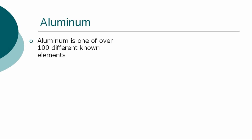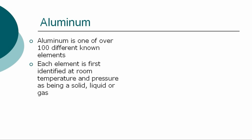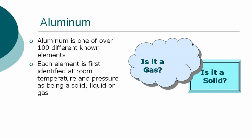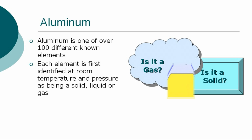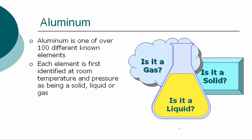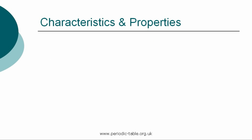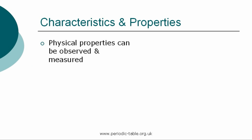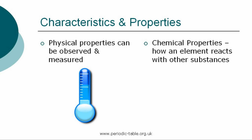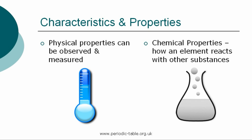The element aluminum is one of over 100 different chemical elements known to modern chemistry. Each element is first identified at room temperature and pressure as being a solid, liquid, or gas, referred to as states of matter. Aluminum is a solid at normal room temperature and pressure. Each element has physical properties that can be observed and measured, such as color, density, and odor. The chemical properties are the characteristics that determine how a substance will react with other substances, such as water or oxygen.